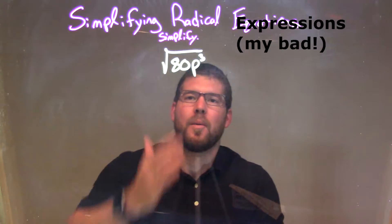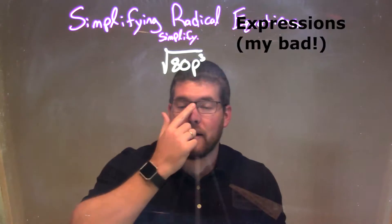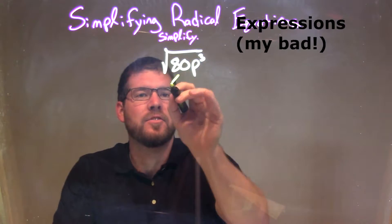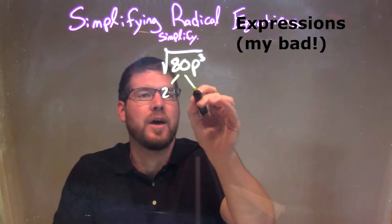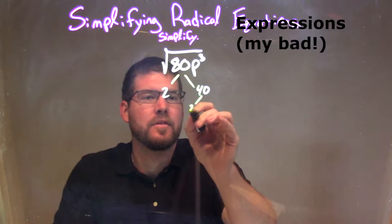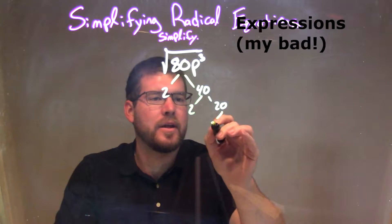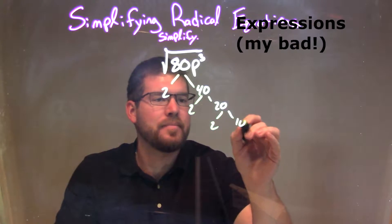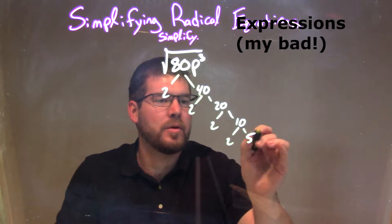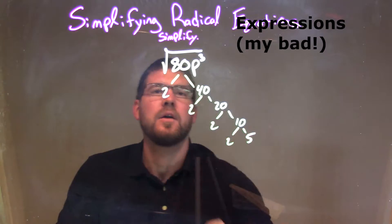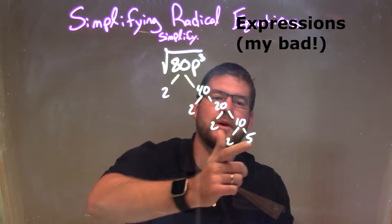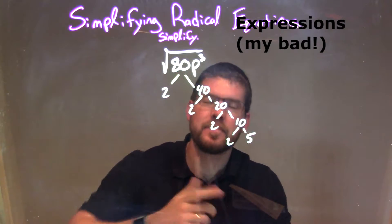Let's do our prime factorization of 80. 80 is just 2 times 40. 40 is 2 times 20. 20 is 2 times 10, and 10 is 2 times 5. Pretty simple, right? So 80 is just 2 times 2 times 2 times 2 times 5.